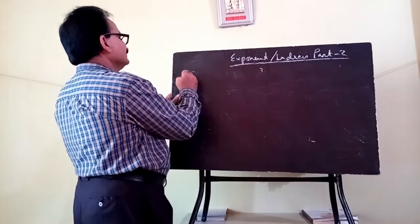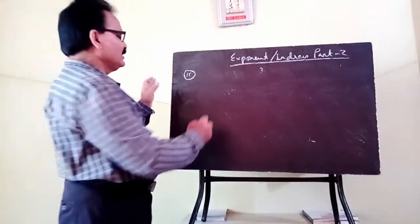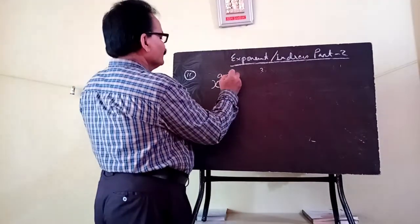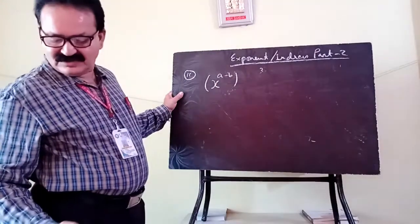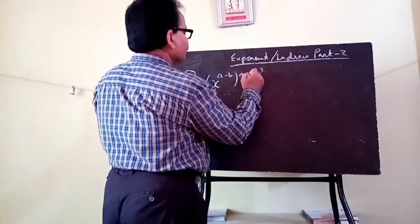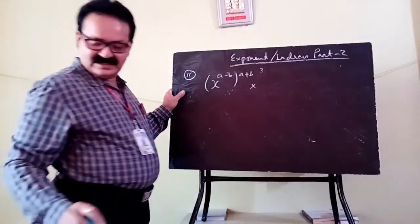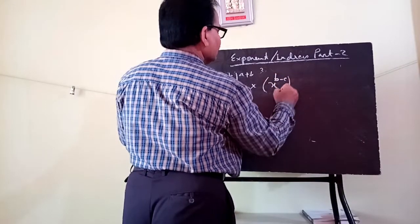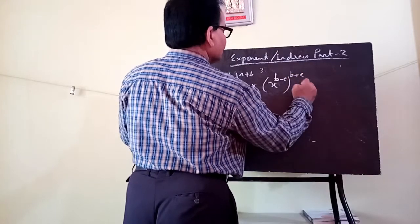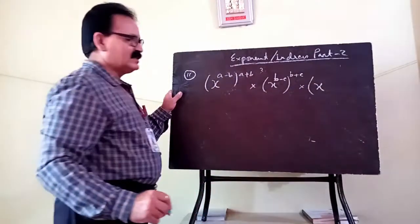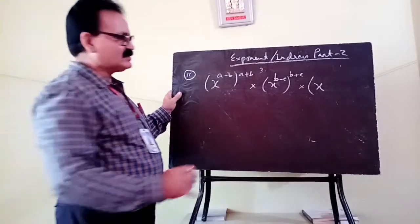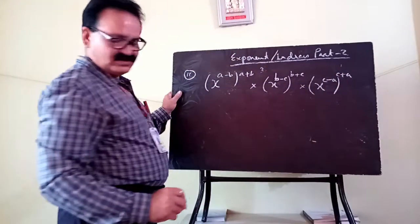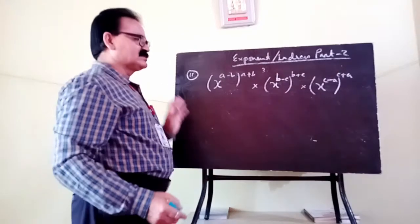Second question: suppose there is a question — x to the power a minus b, whole to the power a plus b, into x to the power b minus c, whole to the power b plus c, into x to the power c minus a, whole to the power c plus a. You have to simplify this.